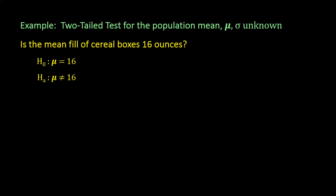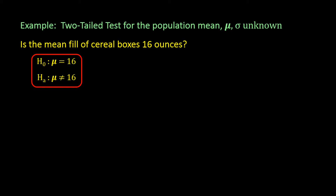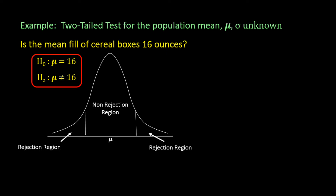When the hypotheses are written like this — equal to and not equal to — this is called a two-tailed test, since we are interested in two tails of rejection: the upper tail if the mean fill is too much above 16 ounces, and the lower tail if the mean fill is much less than the hypothesized 16 ounces. The area in between these two tails in the middle is called the non-rejection region.